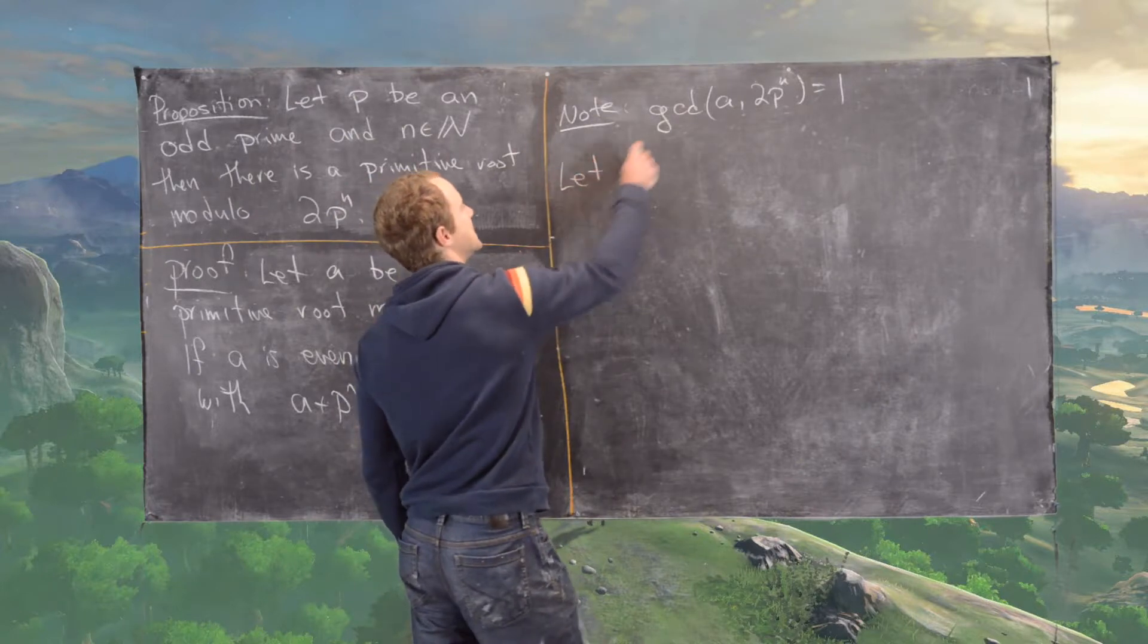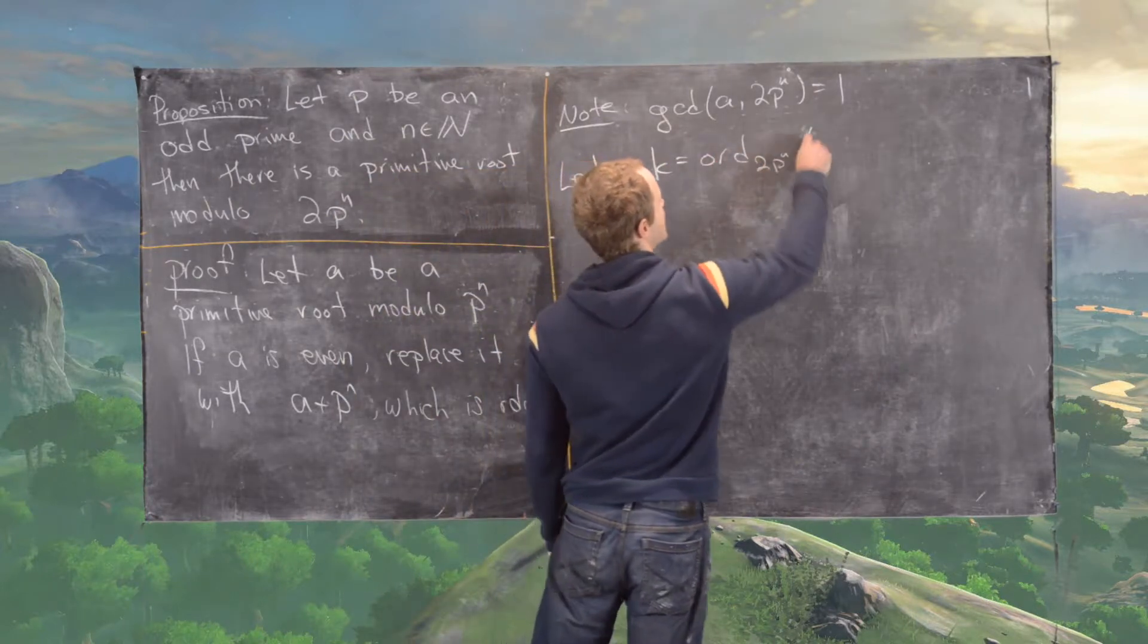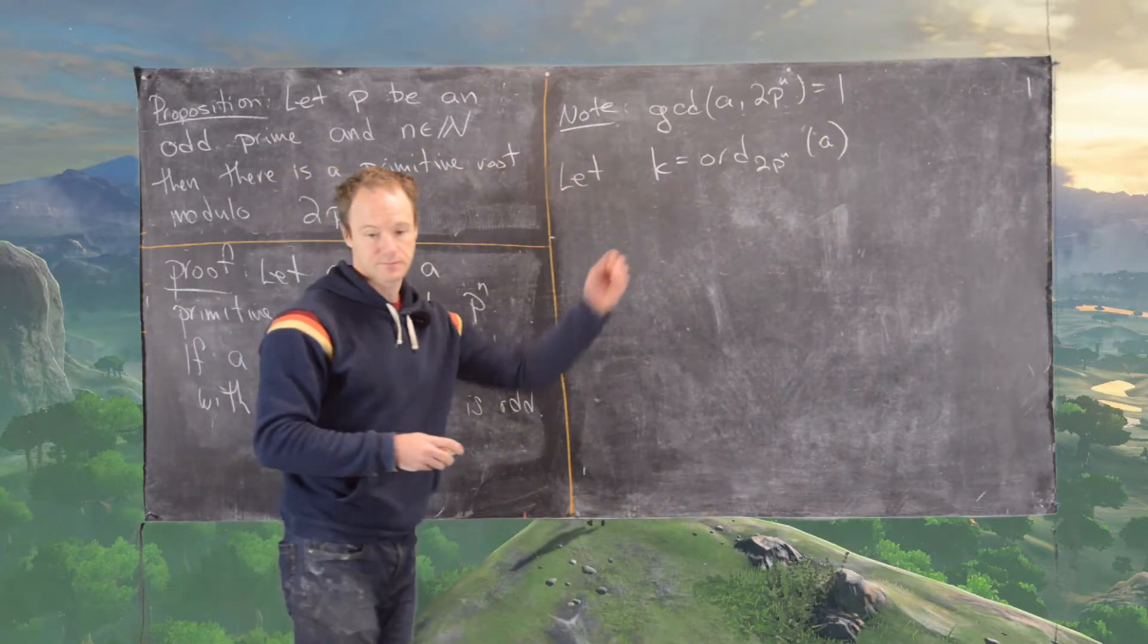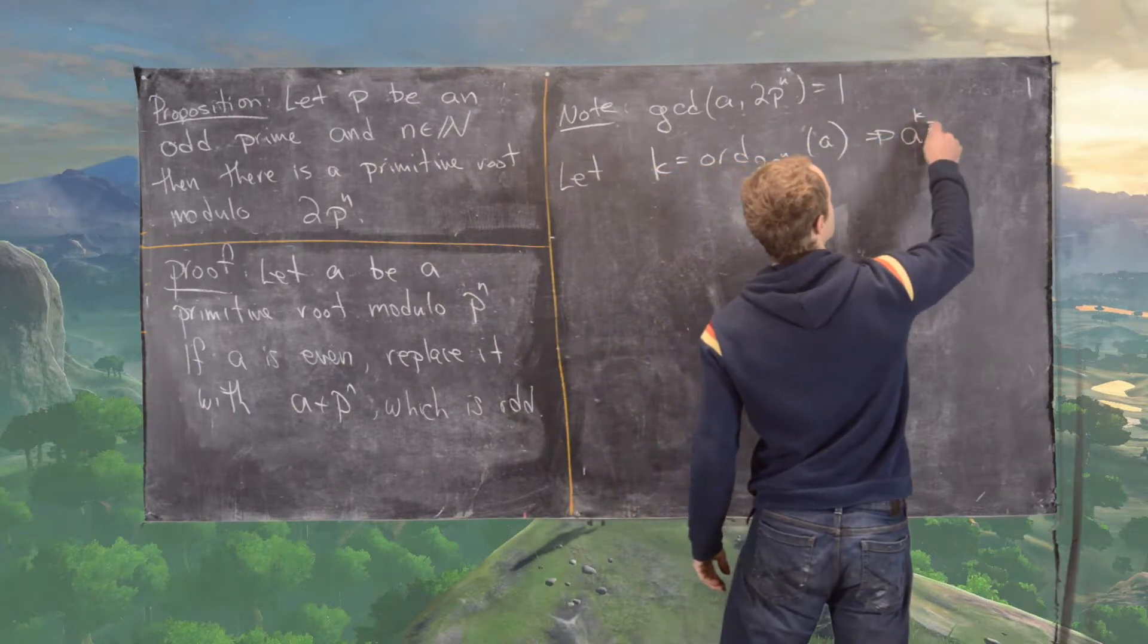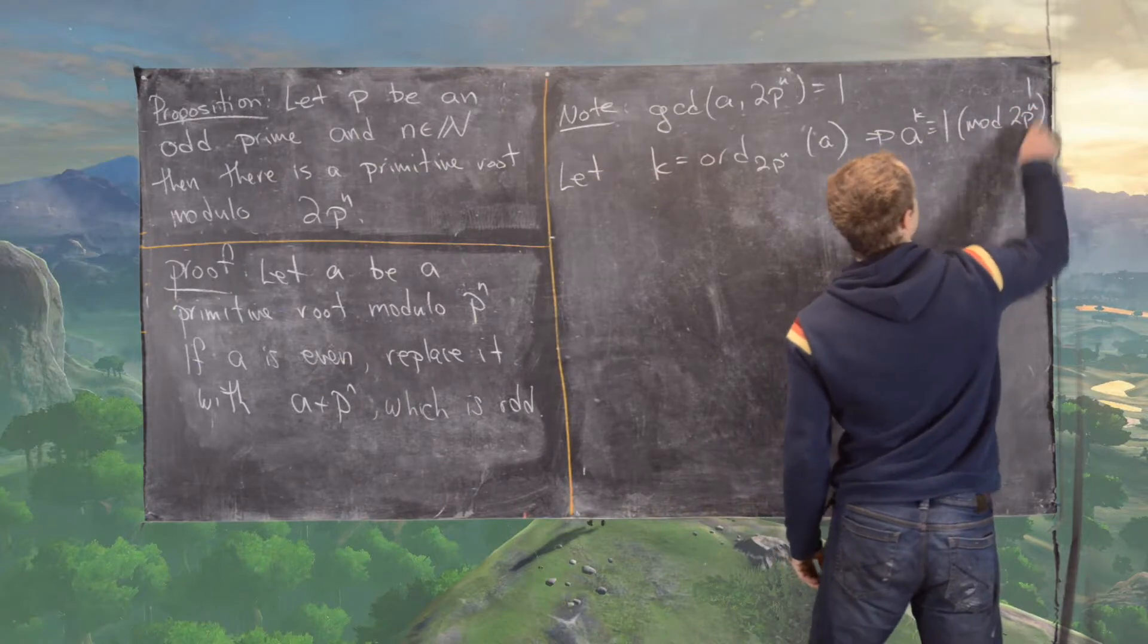Now let k equal the order of a modulo 2p^n. Notice that this tells us that a^k is congruent to 1 mod 2p^n.